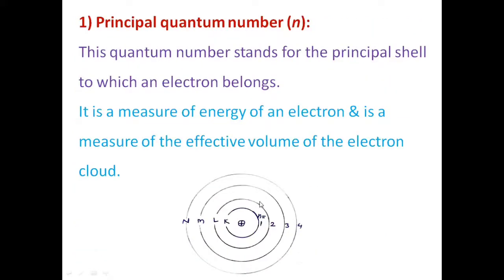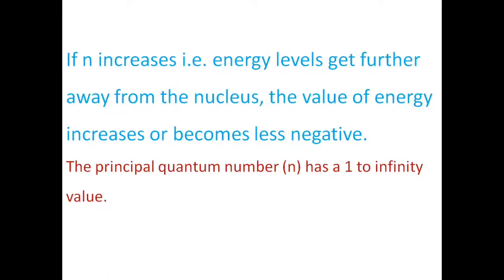The principal quantum number stands for the principal shell to which an electron belongs. It is denoted by the symbol N. The nucleus is at the center and the electron revolves around it. The principal quantum number N measures the energy of the electron and the effective size of the electron cloud. Its values range from 1 to infinity.